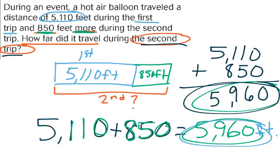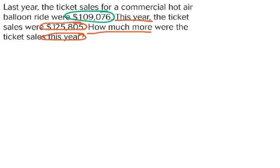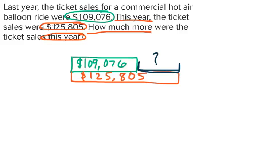So we just looked at two problems — one required subtraction and one required addition — and we used models to show both. Now let's take a look at a problem for you to solve. Last year, the ticket sales for the commercial hot air balloon ride were $109,076. This year, the ticket sales were $125,805. How much more were the ticket sales this year? We're going to underline our question: how much more were the ticket sales this year? On your paper, draw yourself a model and solve the problem. This is a 'how much more' problem, but when we draw it as a model, we can see we'll need to subtract to find our missing piece.